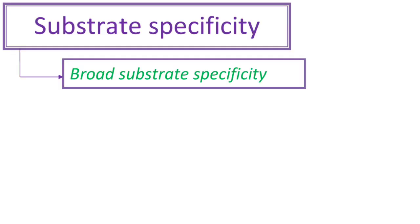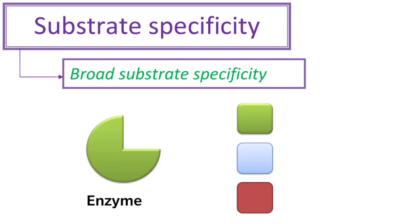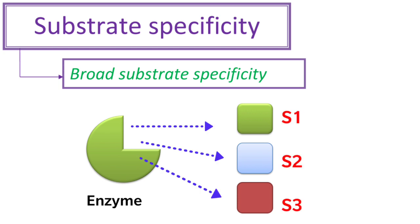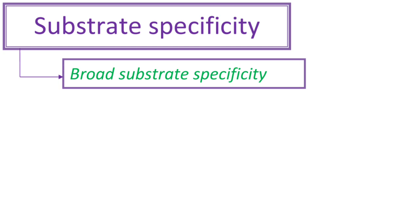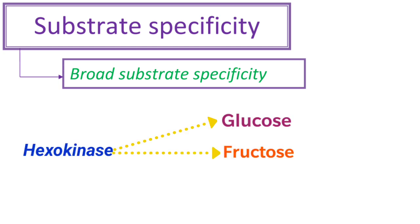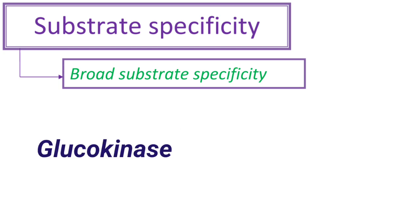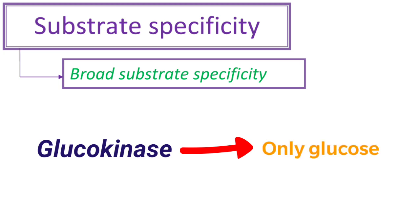The third type of substrate specificity is broad substrate specificity. Here, an enzyme acts on more than one structurally related substrate. For example, hexokinase can act on hexoses like glucose, fructose, and mannose — all three sugars contain six carbons. When compared with glucokinase, hexokinase acts on all six-carbon sugars whereas glucokinase acts only on glucose.